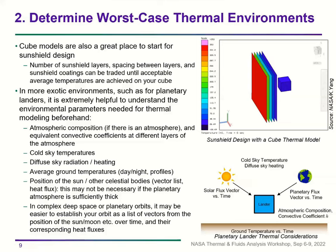For more exotic environments such as planetary landers, it's helpful to understand environmental parameters beforehand: atmospheric composition, equivalent convective coefficients at different atmospheric layers, cold sky temperatures, diffuse sky radiation and heating, and average ground temperatures — particularly important where large temperature swings occur. You can capture solar and planetary vectors as lists over time. In deep space or planetary orbits, establishing orbit as a list of vectors with corresponding heat fluxes may be easier.